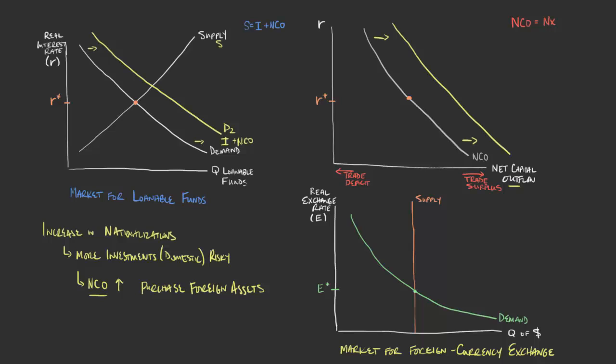Another way to think about it: if you're going to take your assets and invest them elsewhere, you need to finance that — some of that financing will have to come through loanable funds. So there would be an increase in demand for loanable funds. The real interest rate in this domestic market that's experiencing these problems — this government intervention — should increase. Macroeconomic theory tells us we should see an increase in the real interest rate.